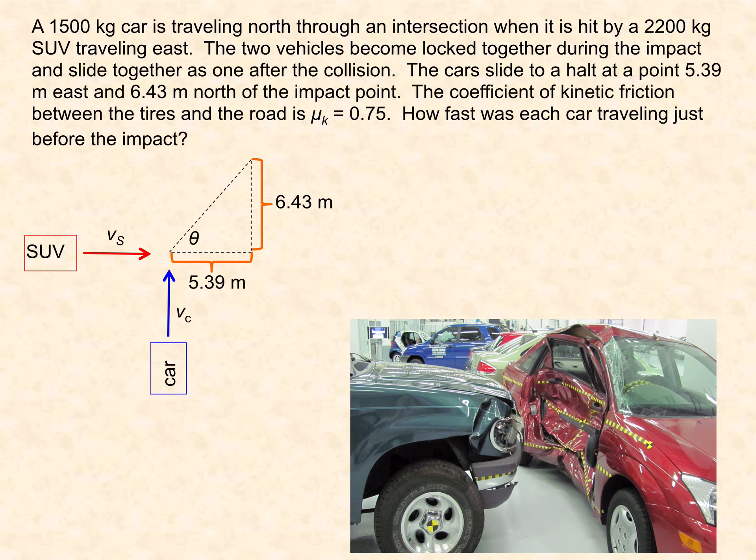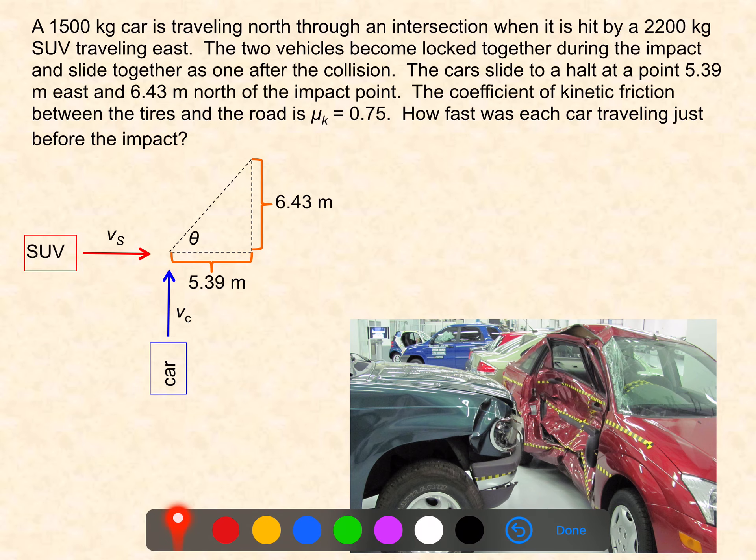The scenario is that you have two cars which are traveling through an intersection and one of them strikes the other. They are traveling at right angles to one another prior to the collision, then the collision takes place and the vehicles stick together so that this is a completely inelastic collision.